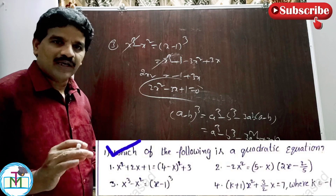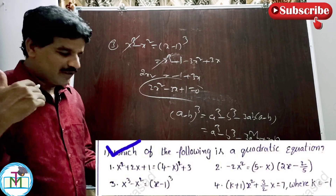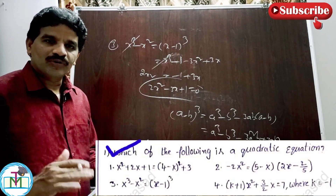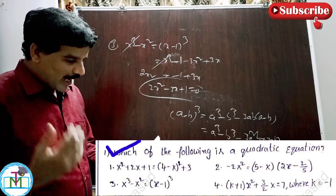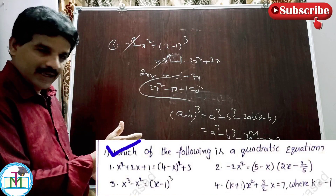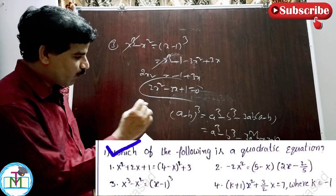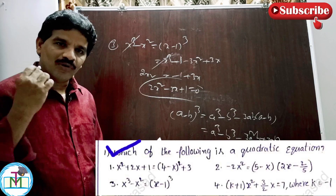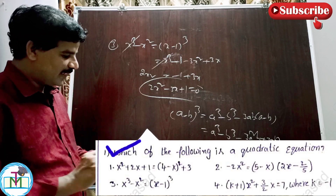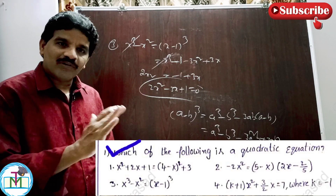So for 'which of the following is a quadratic equation' and 'which of the following is not a quadratic equation' type questions, check if the highest-degree x² terms cancel on both sides. If they cancel, it's not quadratic. Option 4 also has x² terms that cancel, so option 3 is confirmed as the right answer.